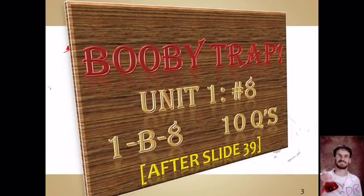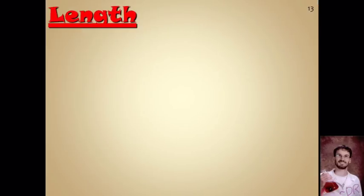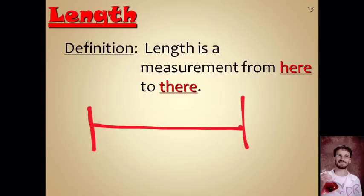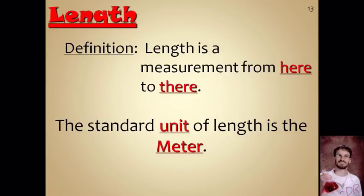This leads us to the first booby trap — 10 questions about the history of measurements and the SI system. Now let's jump ahead and start talking about actual measurements. For each type of measurement, you need to know a definition, a unit, a tool, and a fun fact. Length you can define as the measurement from here to there — the distance from one spot to another.